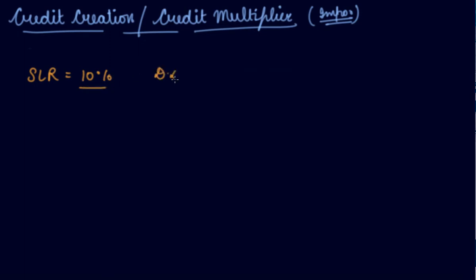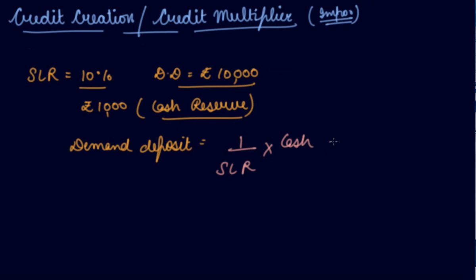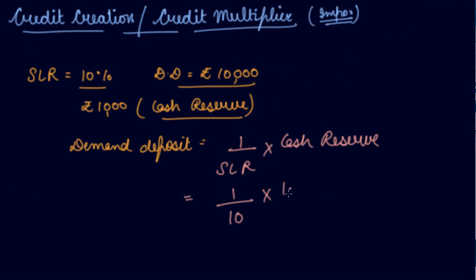If your SLR — the cash reserve you have to keep — is 10% based on past experience, and there is a demand deposit of rupees 10,000, then you have to keep rupees 1,000 as a cash reserve for people who come to withdraw. Your demand deposit equals 1 divided by SLR, multiplied by your cash reserve. So: 1 divided by 10% multiplied by 1,000 gives you a demand deposit of rupees 10,000.